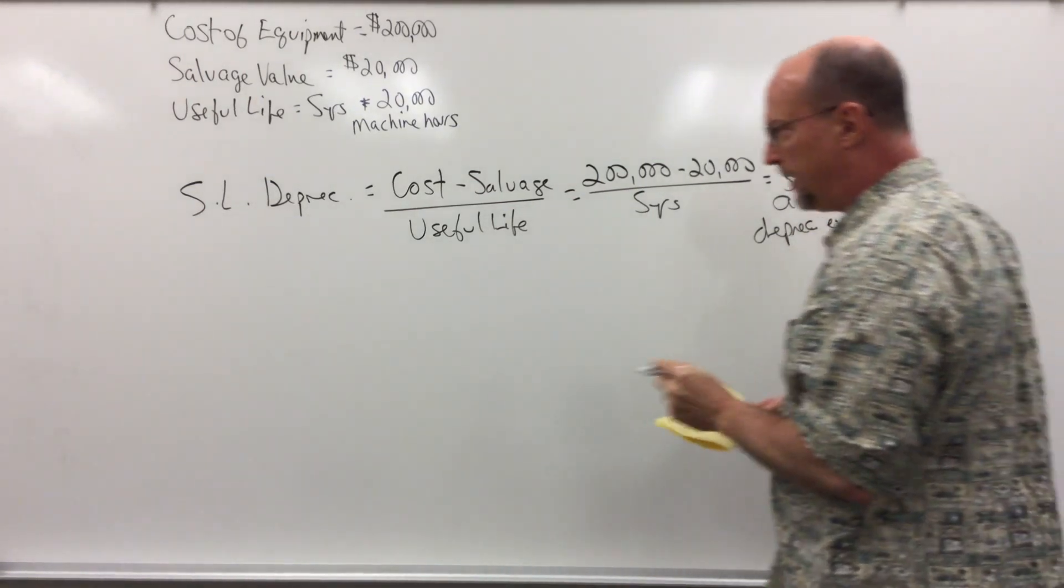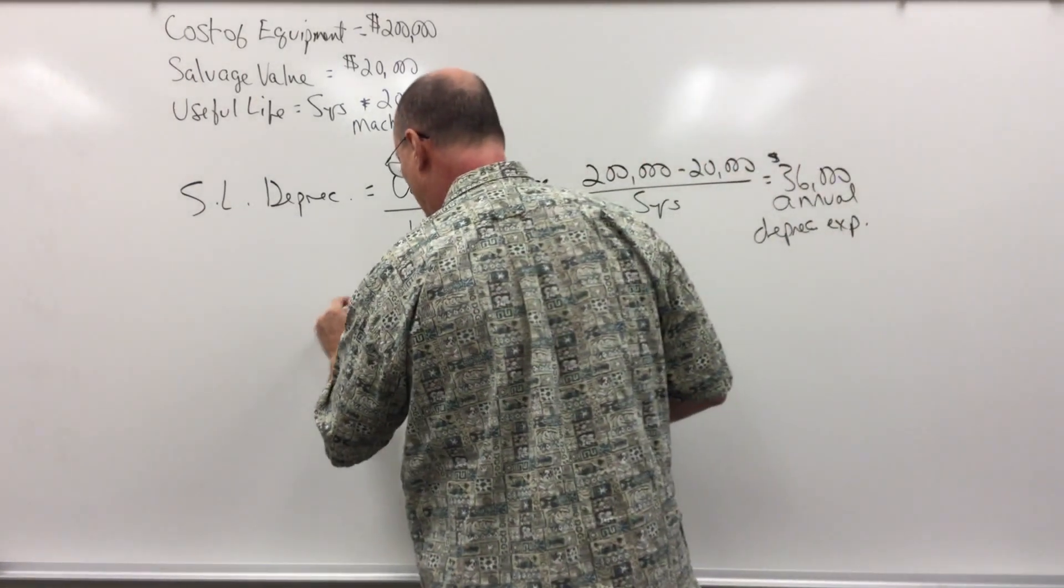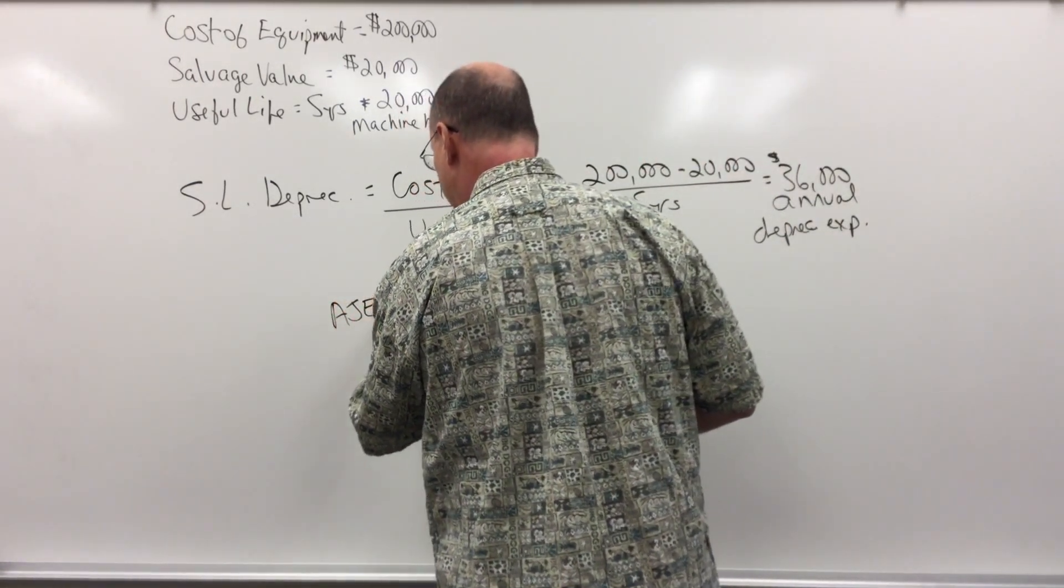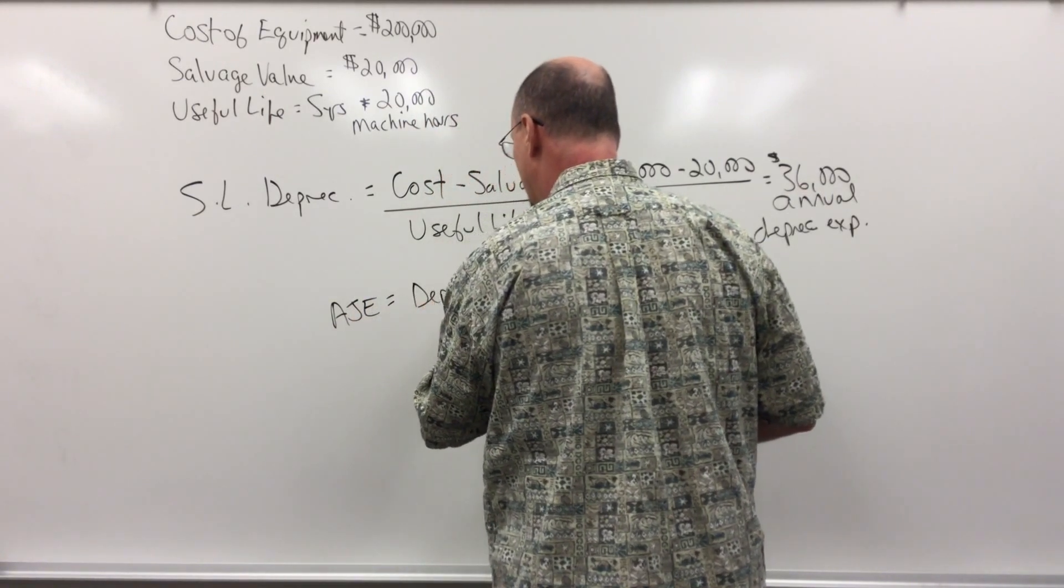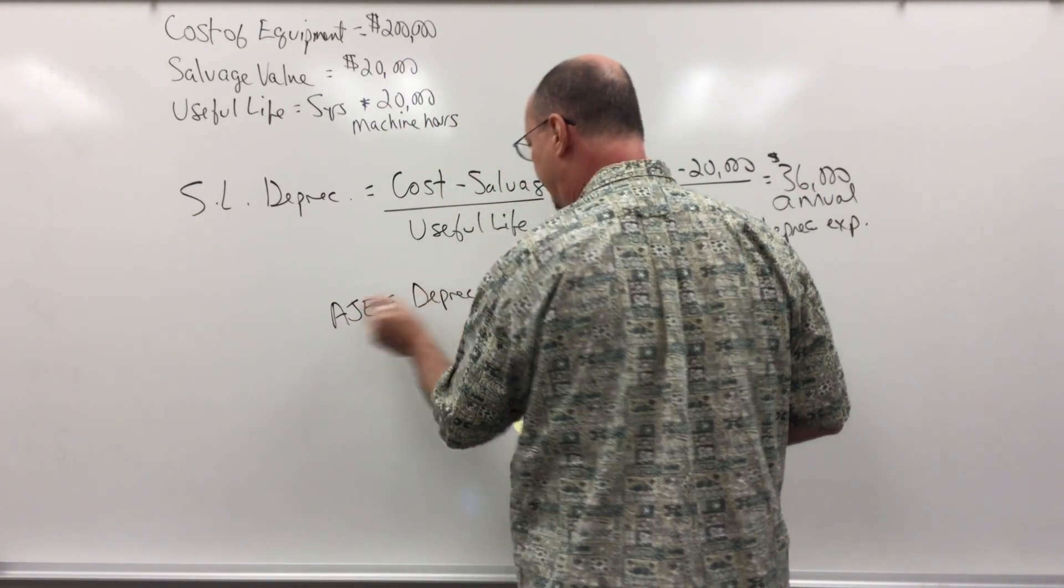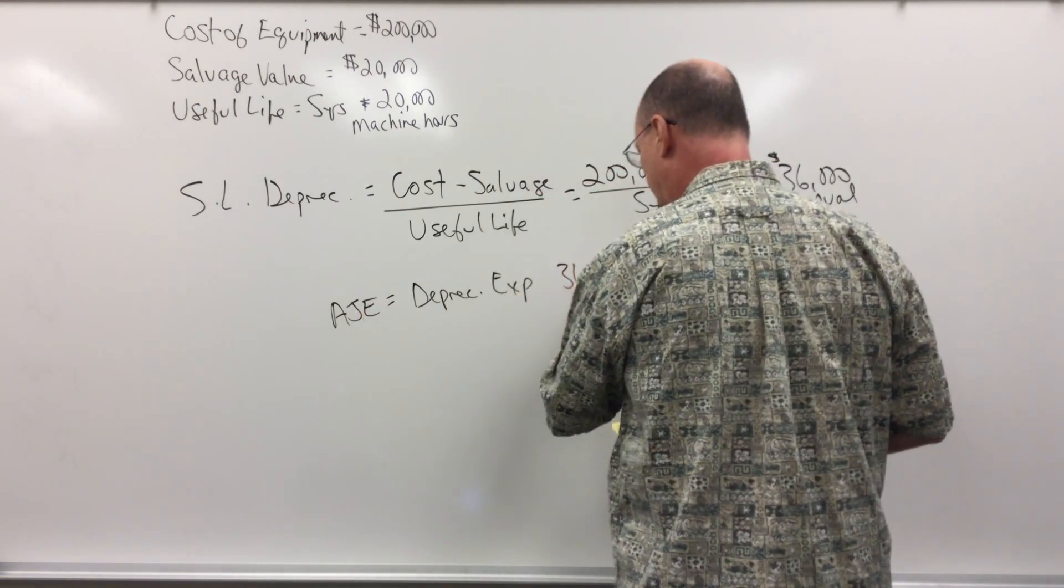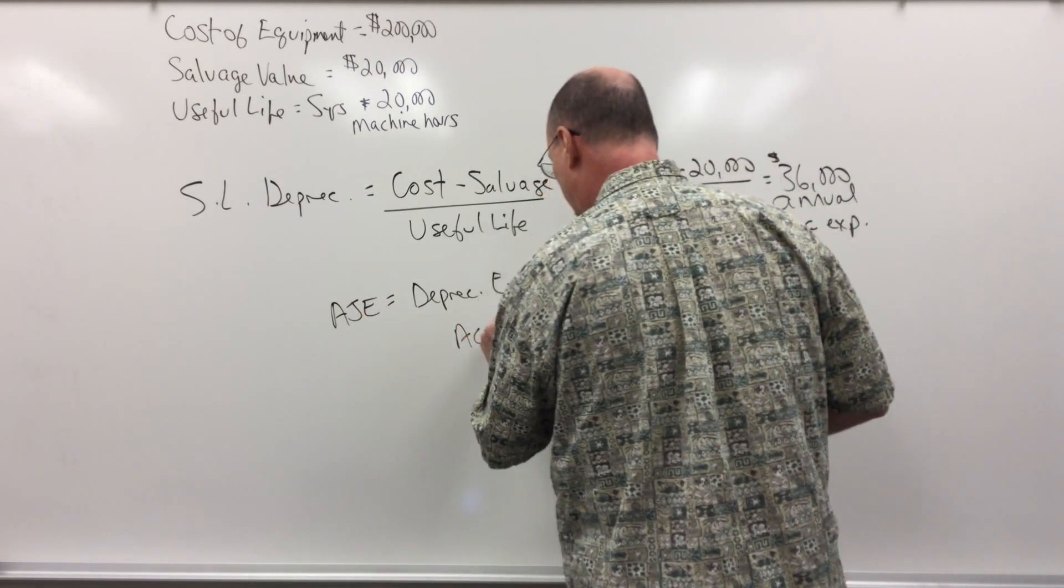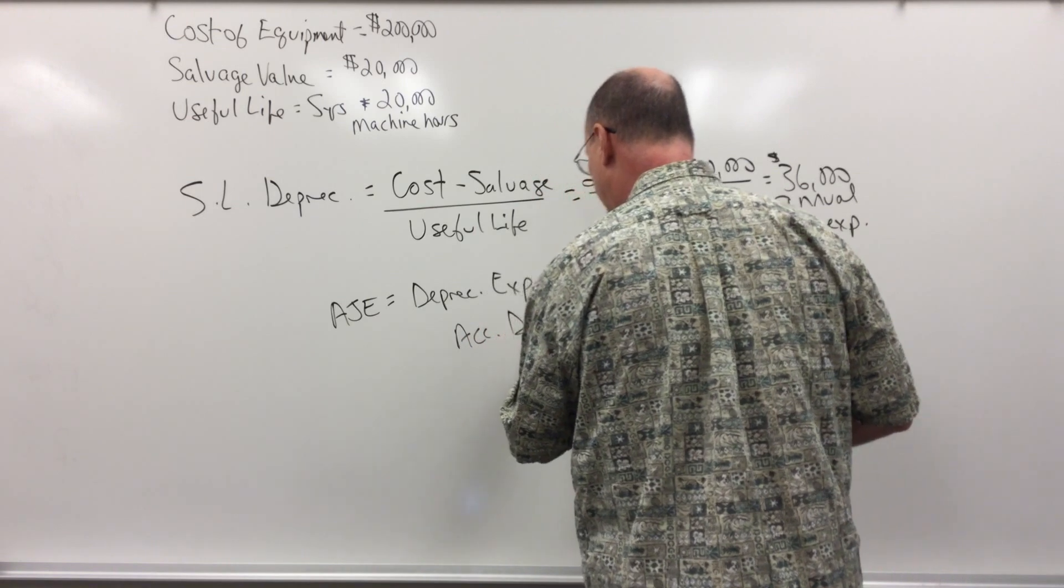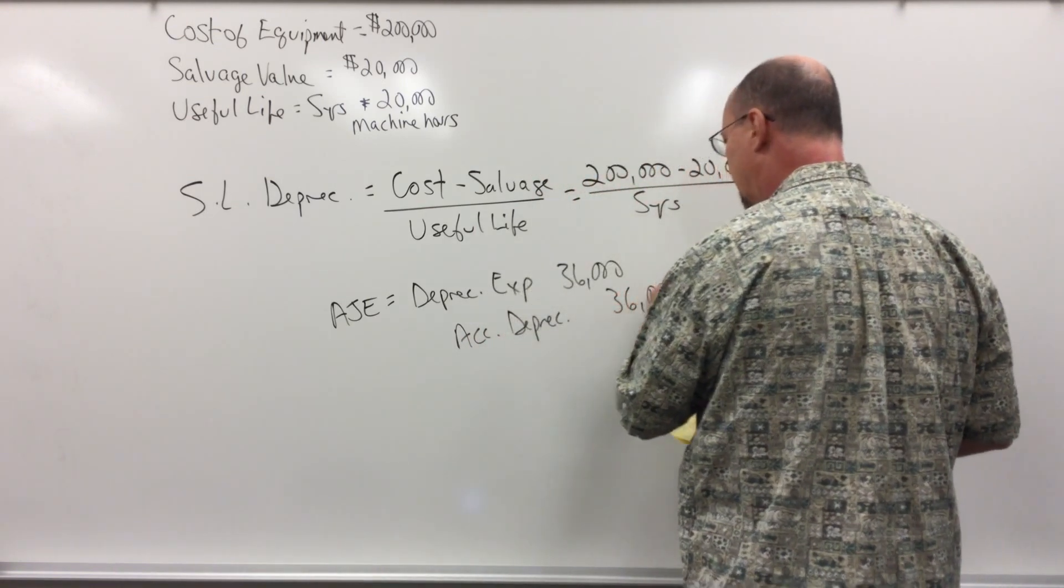The adjusting entry that we record would be debit depreciation expense - and AJE is adjusting journal entry - for $36,000, and we would credit accumulated depreciation for $36,000.